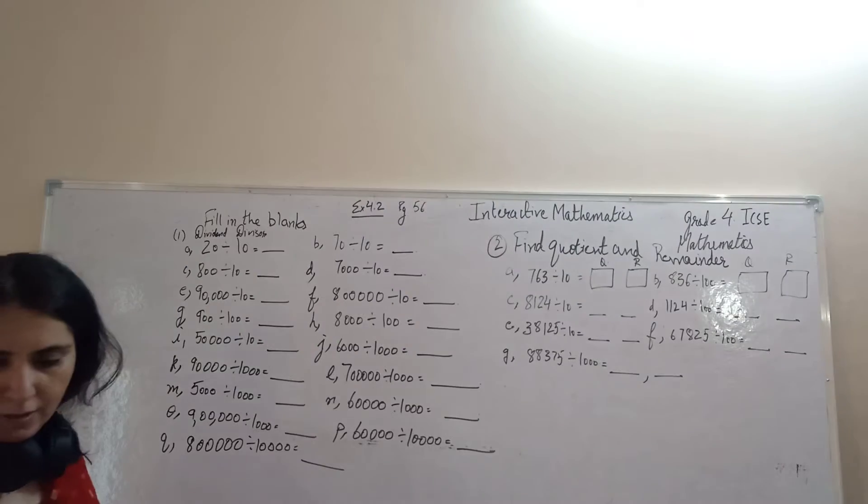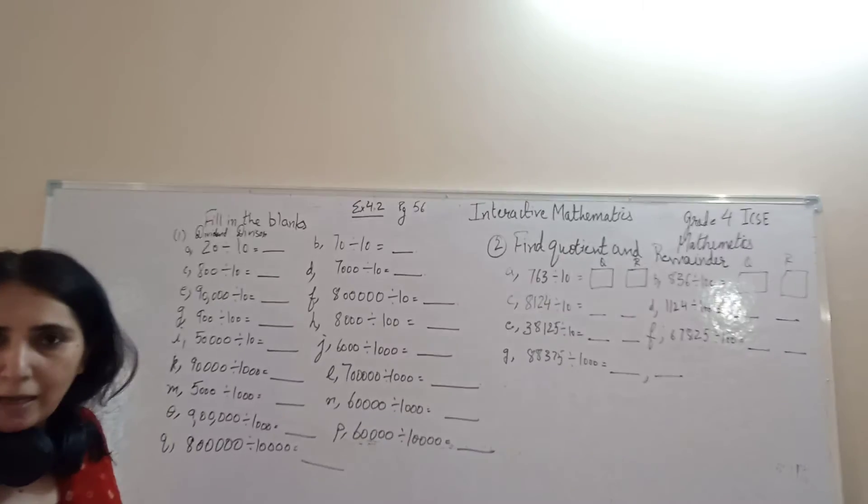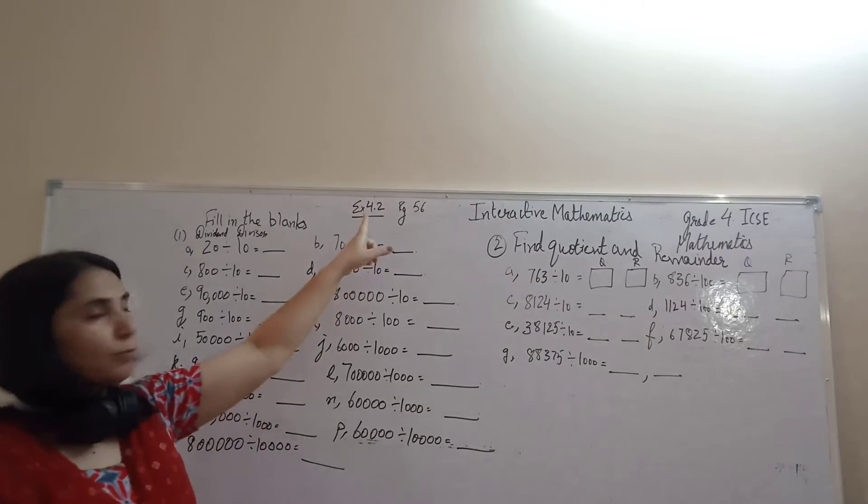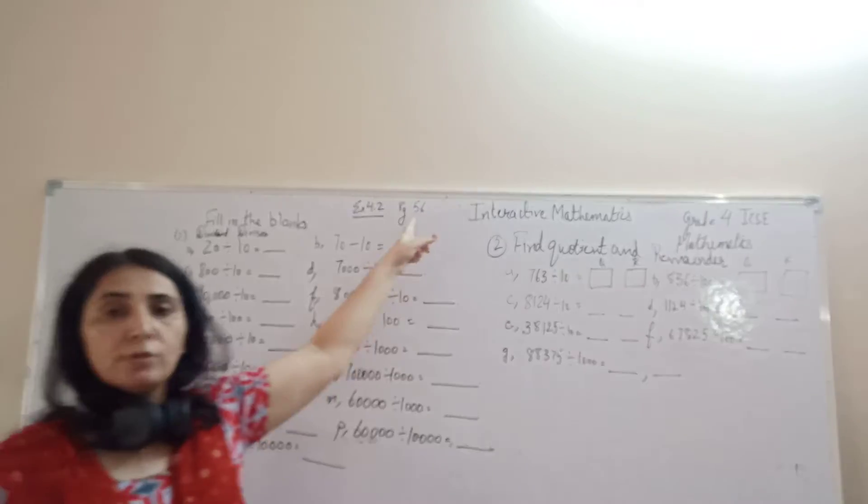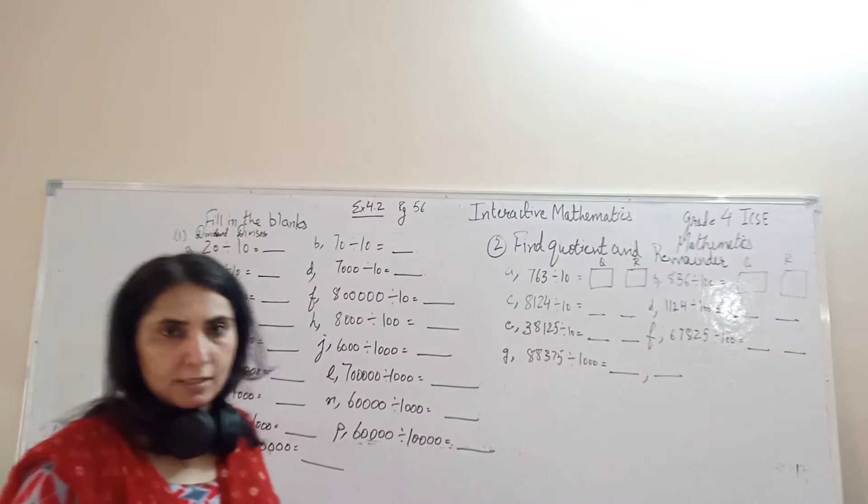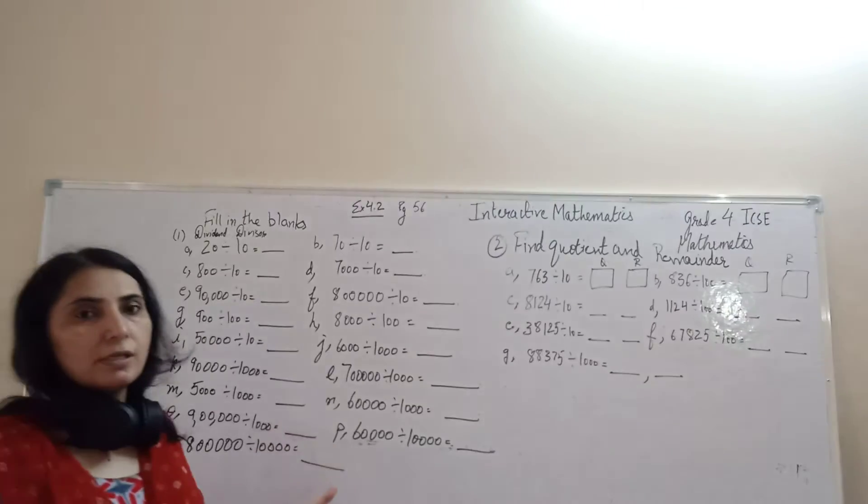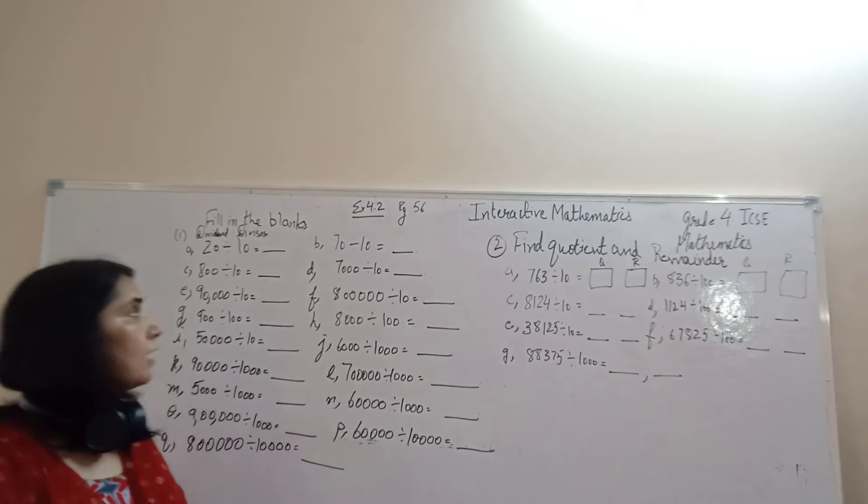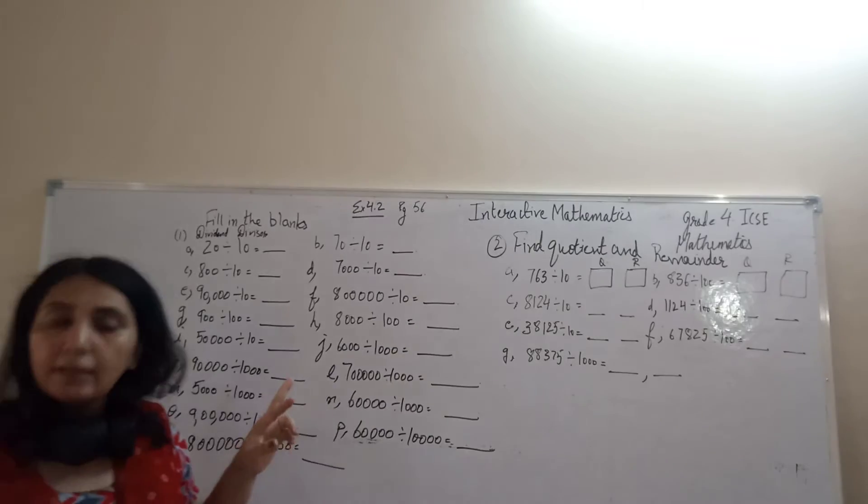Hello children, welcome back. Today I am going to explain exercise 4.2 which is given in your book on page 56 and we are going to learn the concept of division of a number by 10, 100 and 1000.